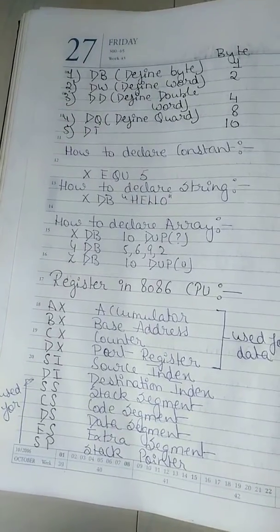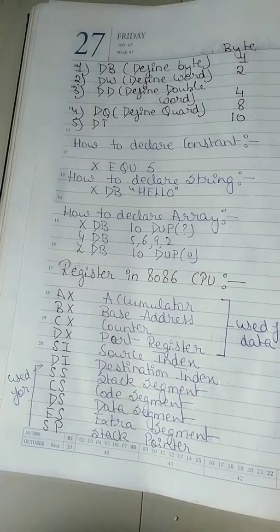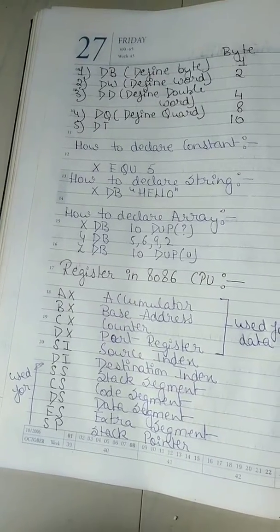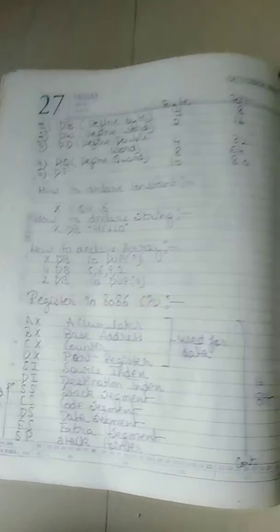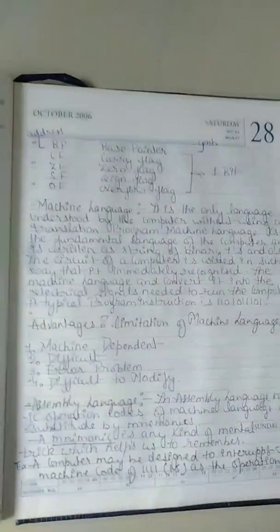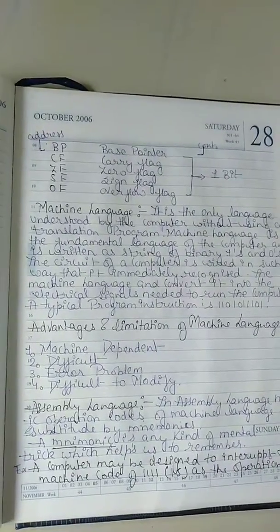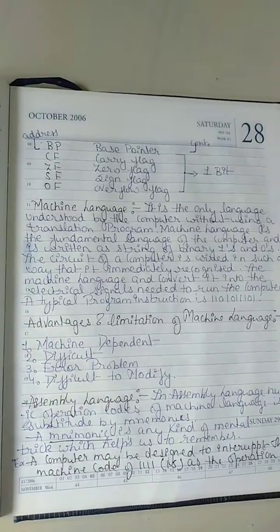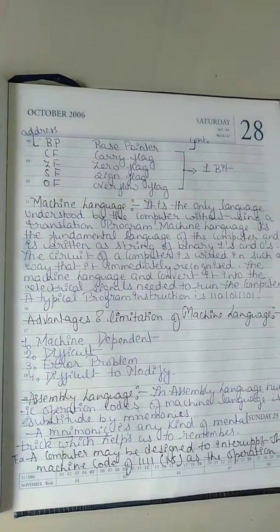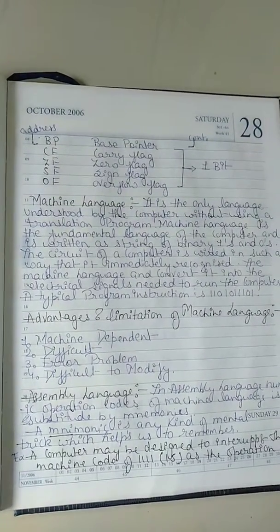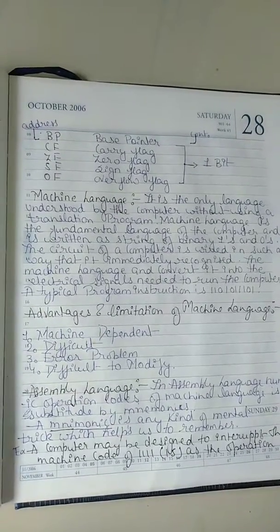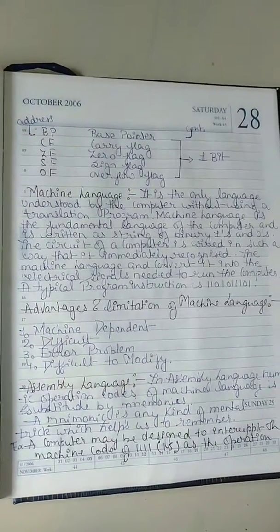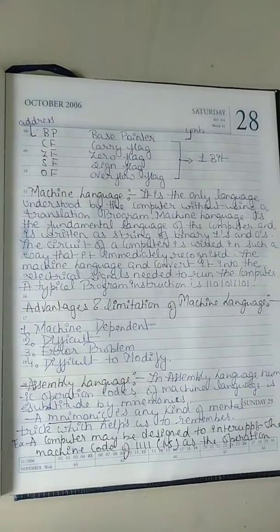The address registers used are SS (stack segment), code segment, data segment, extra segment, stack pointer, and BP for base pointer. Then CF is carry flag, ZF is zero flag, SF is sign flag, and OF is overflow flag. These flag registers have one-bit capacity.